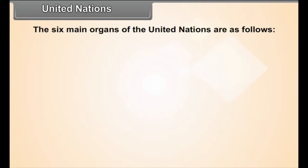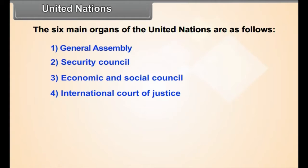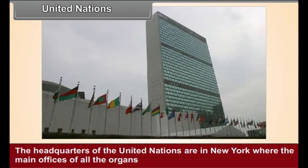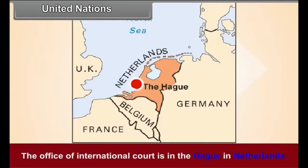The six main organs of the United Nations are as follows. The headquarters of the United Nations are in New York, where the main offices of all the organs except the International Court of Justice are also located. The office of the International Court of Justice is in the Hague in Netherlands.